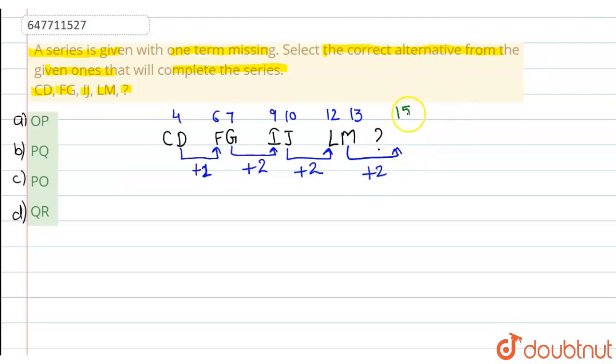So when we reach 15, there will be a place value of O. And after O, the next number will be P. So according to this, your answer is OP. Now see in your options, option number A, OP is your right answer. Thank you.